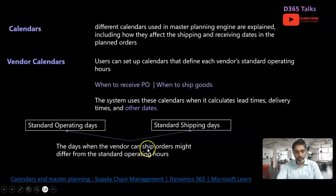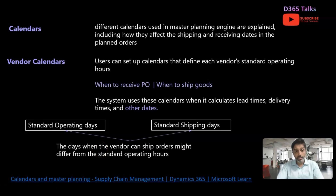The days when a vendor can ship orders might differ from the standard operating hours. Their standard operating hours can be completely different from the days during which the vendor actually ships the material. The shift in which they operate can also differ if they are still willing to transport the material during weekday nights or weekends. That's why we have two separate calendars.